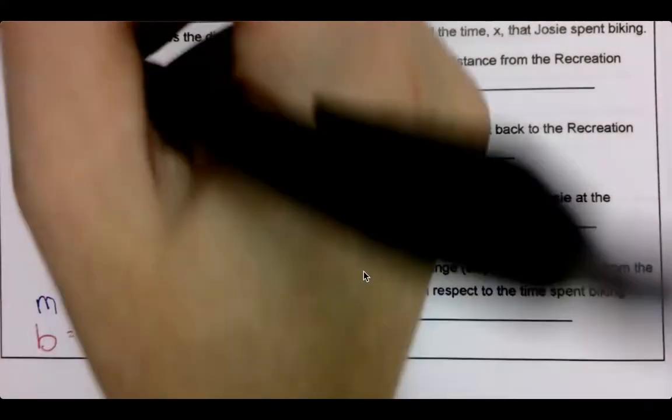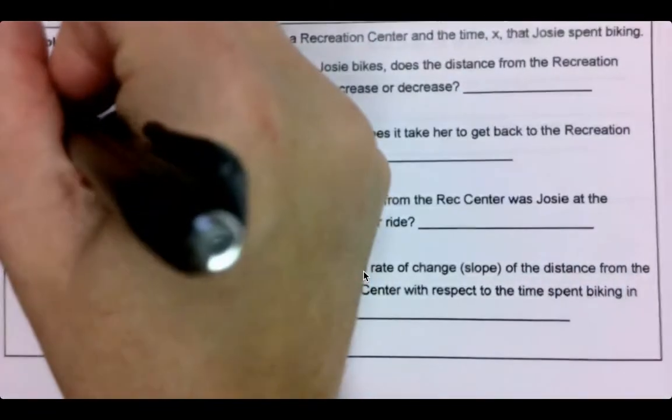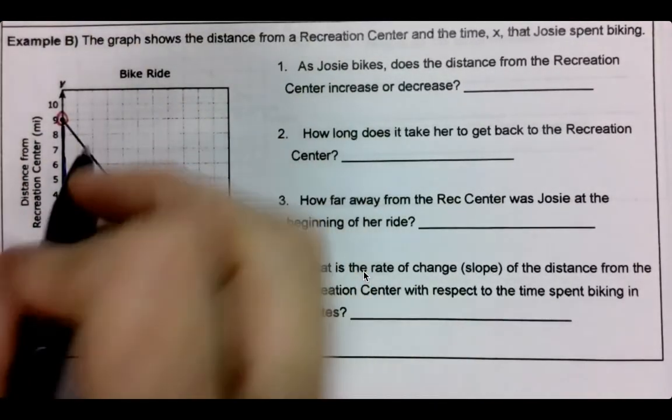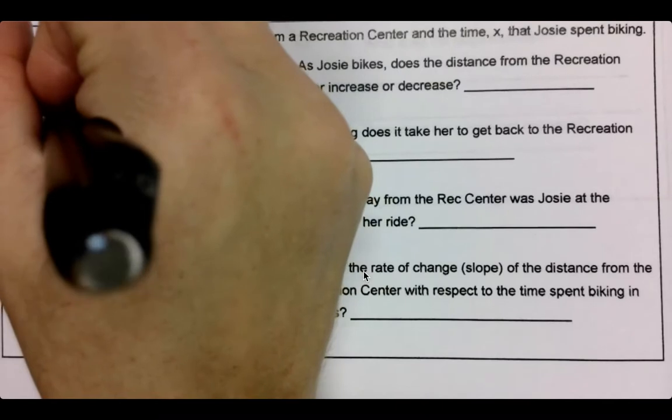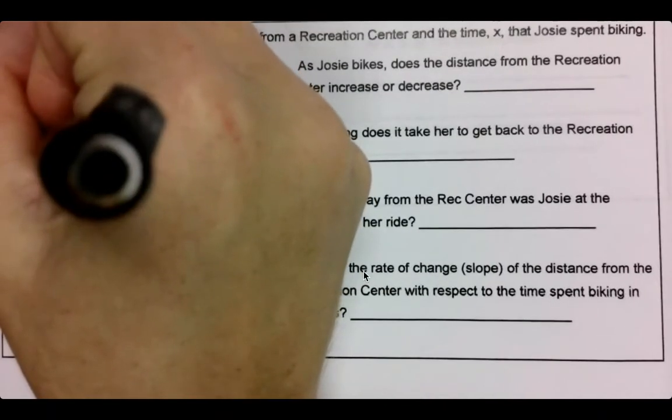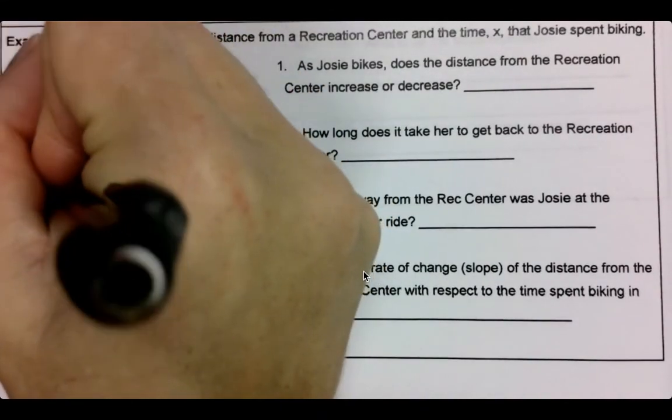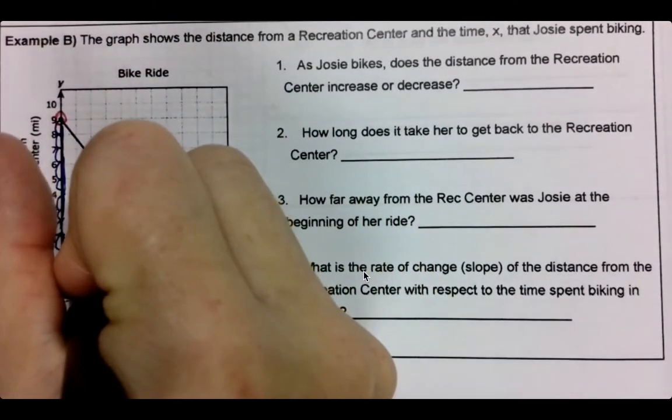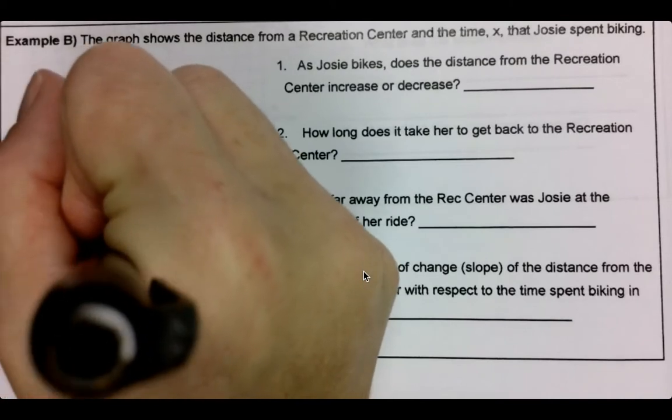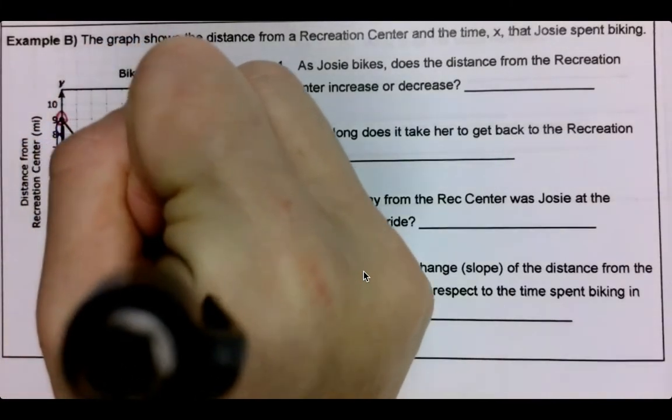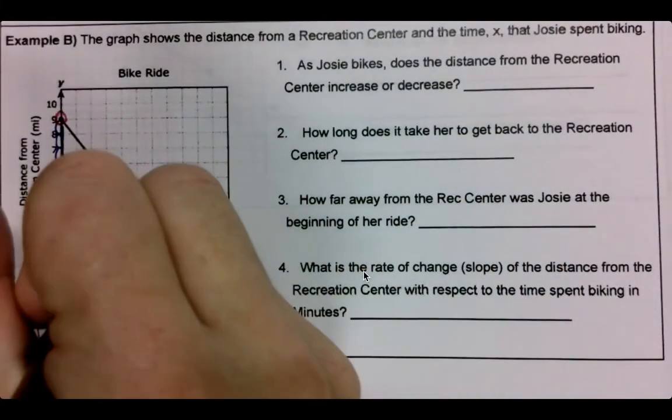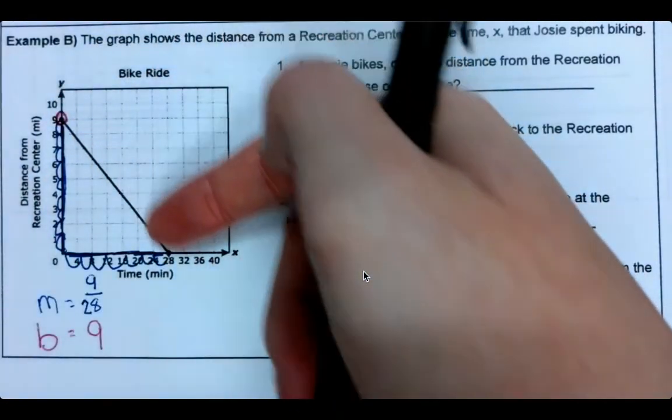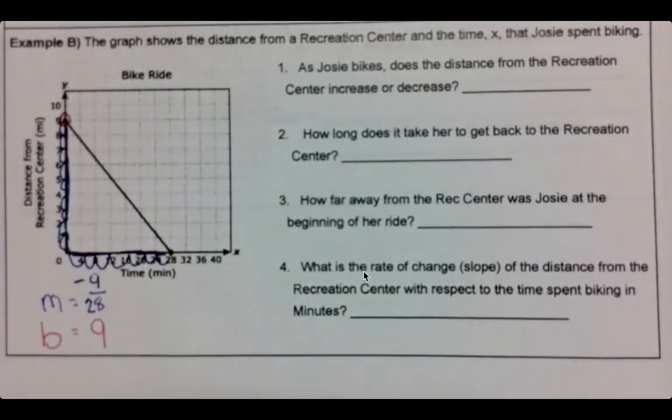Then we can do our slope. So that's that and that's that. We'll just connect those using our grid lines. So that's one, two, three, four, five, six, seven, eight, nine up and down, over one, two, three, four, five, six, seven, but they're going by four, so 28. Notice how it's going down negative, so it's a negative nine over 28.